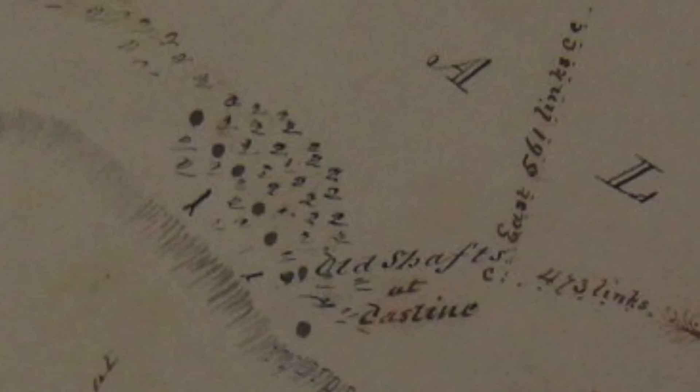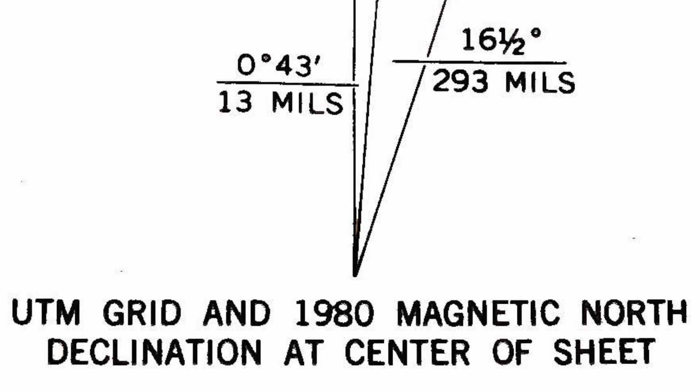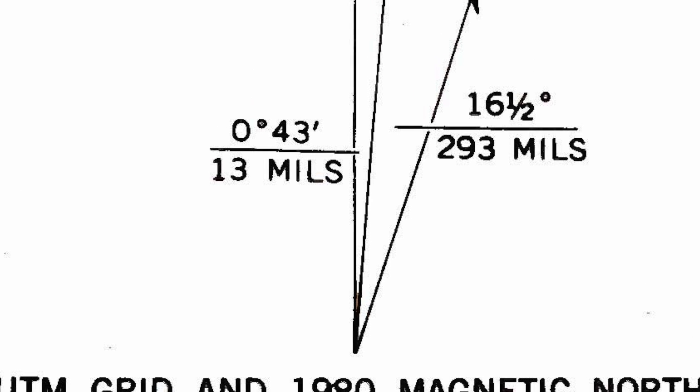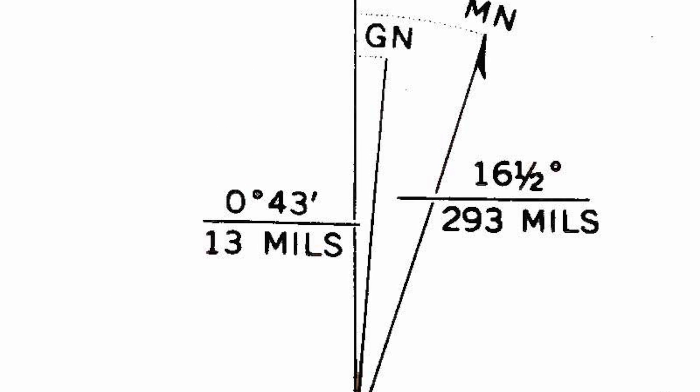The map also indicated magnetic north, so I took a bearing from the corner of the prison directly to the mine site. But this bearing and distance would still not locate the mine site on a USGS map, and the reason is because of something called declination — the difference between magnetic north and true north.